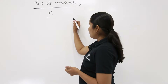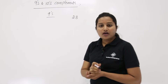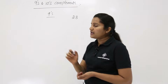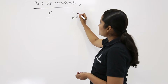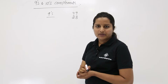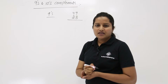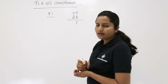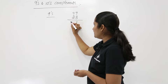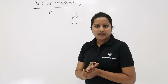For example, if you want to get the 9s complement of decimal number 28 — you have decimal number 28 and you need to subtract each and every digit from 9. So here 9 minus 8 is 1 and 9 minus 2 is 7. So 71 is the 9s complement of 28.